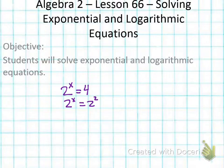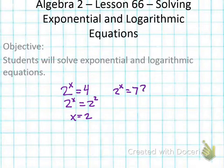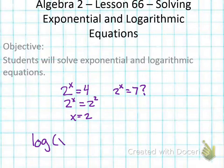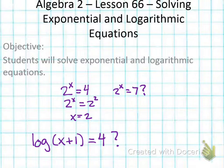We were able to set the exponents equal to each other and say x must equal 2. What would happen, though, if I had 2 to the x equals 7? I can't make 7 have the same base. So we have to have another method, and that's what we're going to talk about today. Logarithmic equations might look something like log of x plus 1 equals 4. We're going to talk about how to do both of these things in today's lesson.